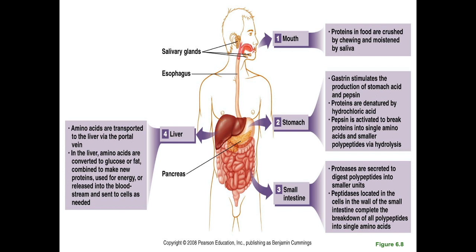Looking at a diagram of this process: we start in the mouth where proteins are crushed by chewing and moistened by saliva, then the food travels down the esophagus into the stomach where gastrin stimulates production of stomach acid and pepsin, and the proteins are denatured by hydrochloric acid. Once pepsin is activated it breaks proteins into single amino acids and smaller polypeptides via hydrolysis. In the small intestine, proteases digest polypeptides into small units and peptidases located in the intestinal wall cells complete the breakdown into single amino acids. You don't absorb any protein as full molecules — all protein is broken down into amino acids before it enters your bloodstream.